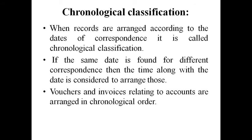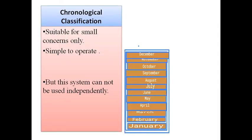There is another classification based on date, time, day, month, or year — that is called chronological classification. When records are arranged according to the dates of correspondence, it is called chronological classification. If the same date is found for different correspondence, then time along with the date is considered. Vouchers and invoices relating to accounts are arranged in chronological order. For example, files are arranged month-wise: January, February, March, April — for a particular year. For another year, the same order is followed again.